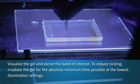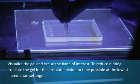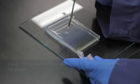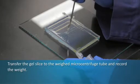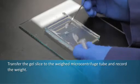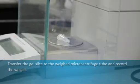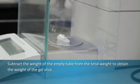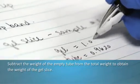To reduce nicking, irradiate the gel for the absolute minimum time possible. Transfer the gel slice to the weighed microcentrifuge tube and record the weight. Subtract the weight of the empty tube from the total weight to obtain the weight of the gel slice.